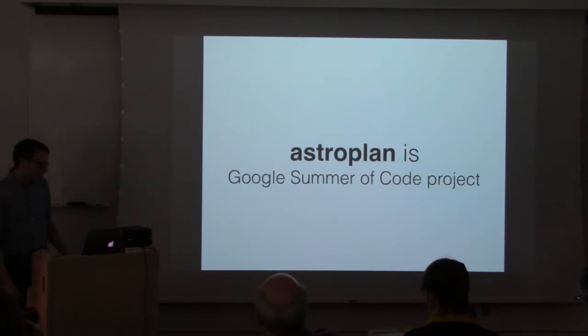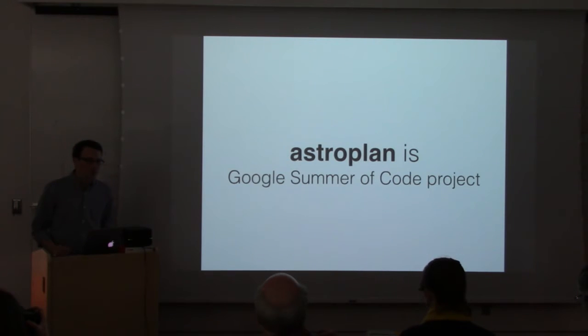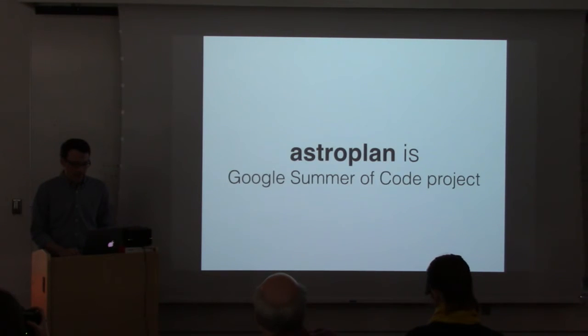AstroPlan was developed as a Google Summer of Code project last summer with my partner Jasmine Blanga Medina who with me developed all of the stuff that you're about to see. It's currently only in version 0.1 so we are really looking for your contributions to make it work well and work for all the kinds of astronomers that are in this room because we tried to represent a wide variety of wavelengths on our team that built AstroPlan, but from radio to gamma ray might not actually be enough.